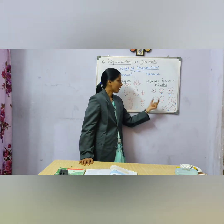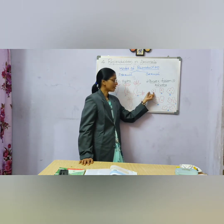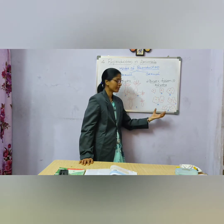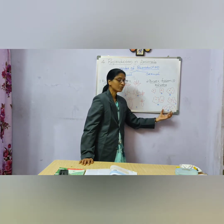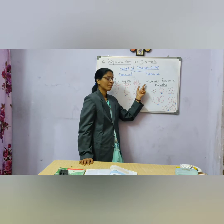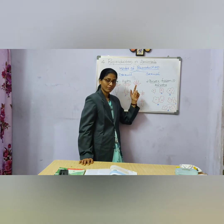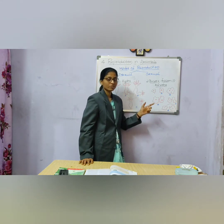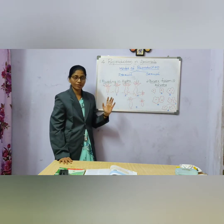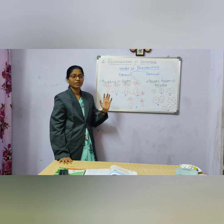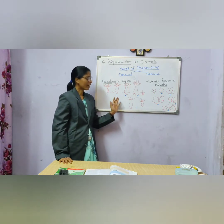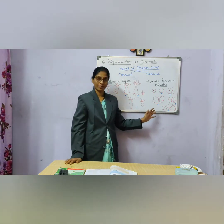An amoeba is dividing into two amoebas — hence it is known as binary fission. This is the process of asexual reproduction taking place in Hydra and Amoeba.